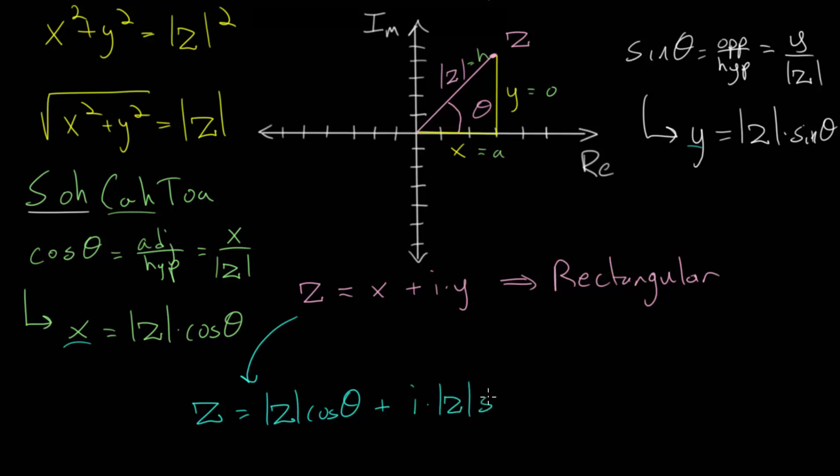And notice that we can factor out the magnitude of z from both of these terms, so that we get the magnitude of the complex number z is multiplied by the cosine of theta, plus i times by the sine of theta. And this right here is what we call the polar form of the complex number z, where z is now in terms of its angle and its magnitude, its length.